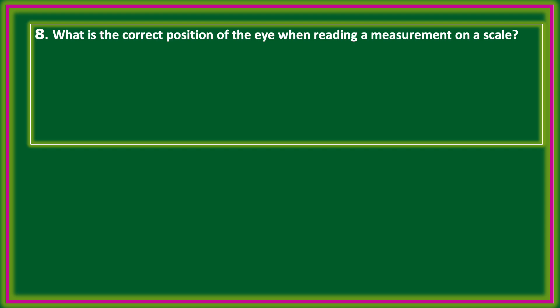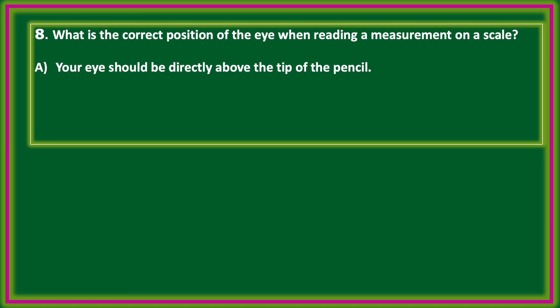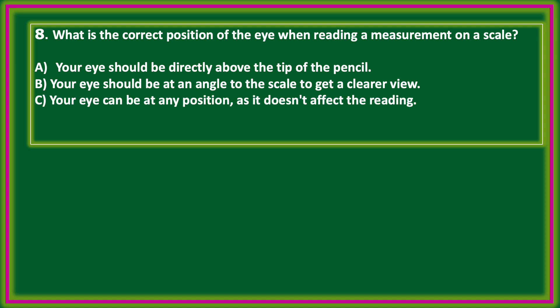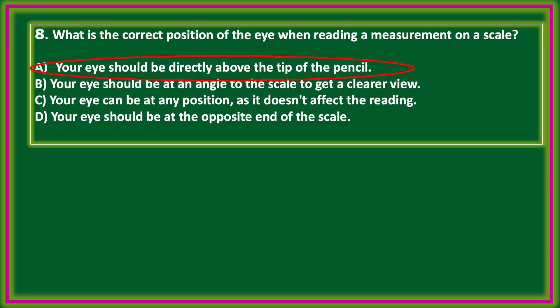What is the correct position of the eye when reading a measurement on a scale? Options: your eye should be directly above the tip of the pencil; at an angle to the scale; at any position; at the opposite end of the scale. The correct answer: your eye should be directly above the tip of the pencil — only then will you get an accurate measurement.